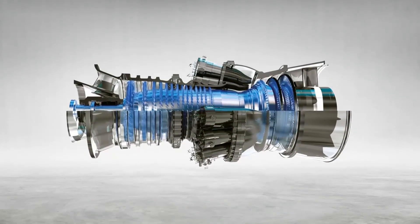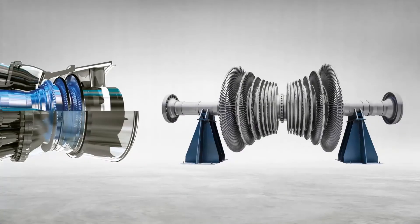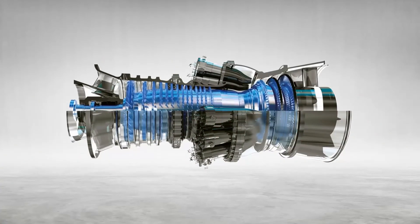In combined cycle power plants, gas turbines work in combination with steam turbines. The hot air in the exhaust of a gas turbine is used to generate steam for a steam turbine. This increases the power and efficiency of the power plant.